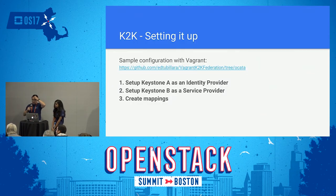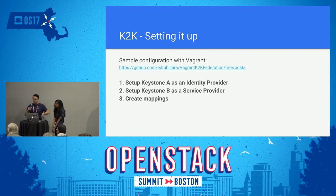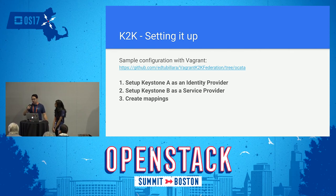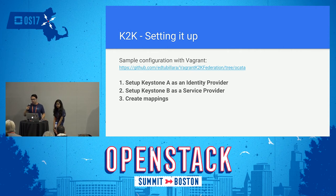I'll briefly talk about how we set this up. I made a GitHub project — if someone wants to set up a Vagrant environment, it sets up two DevStacks with Keystone Federation automatically. There are three basic steps: Step one, set up Keystone A as identity provider. Step two, set up Keystone B as service provider. Step three, create mappings.